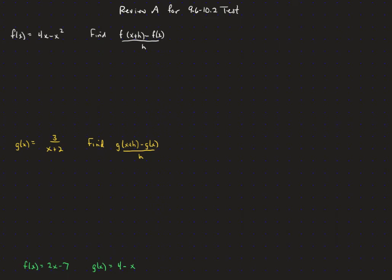Here we're going to do some review problems to get ready for the test on 9.6 to 10.2. So here's our old friend, the average rate of change for f of x equals 4x minus x squared.